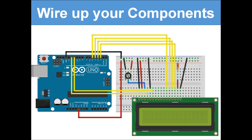Wire up your components: the first pin on your screen goes to ground, the second pin to 5 volts, the third pin to the middle pin of your potentiometer, the fourth to a digital pin, the fifth to a digital pin, then skip four pins, and the next four all go to digital pins. The second-to-last pin goes to 5 volts and the last goes to ground.